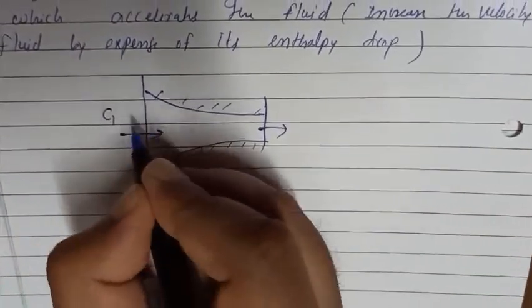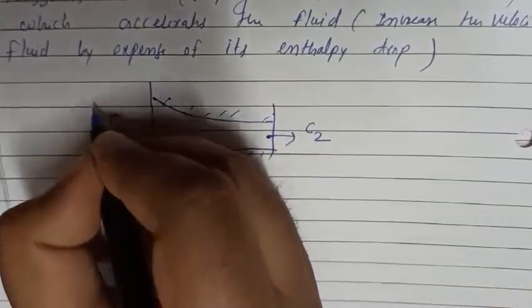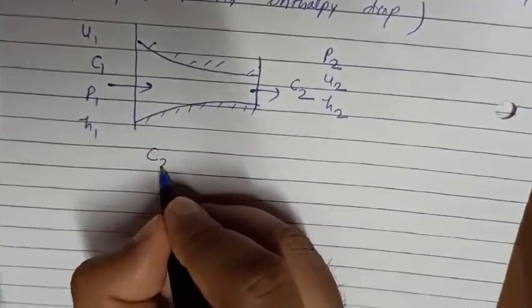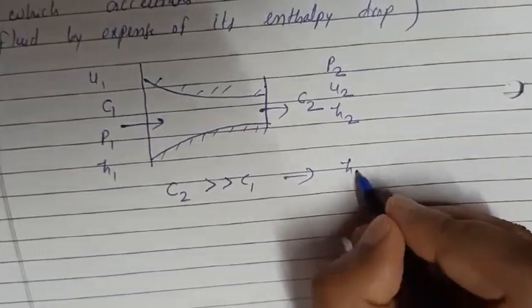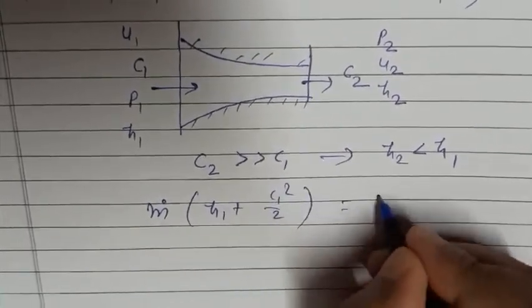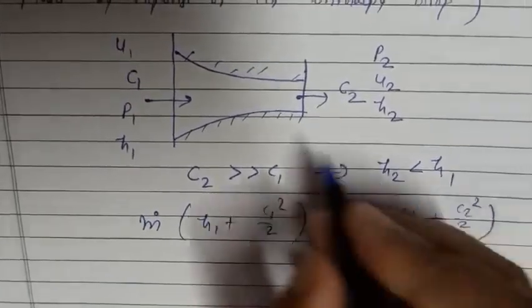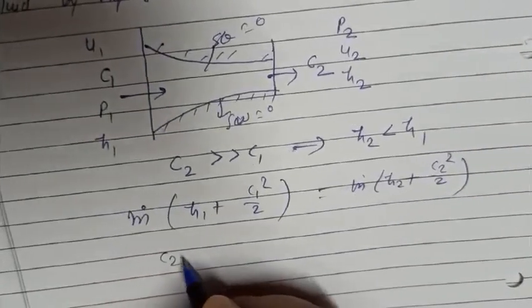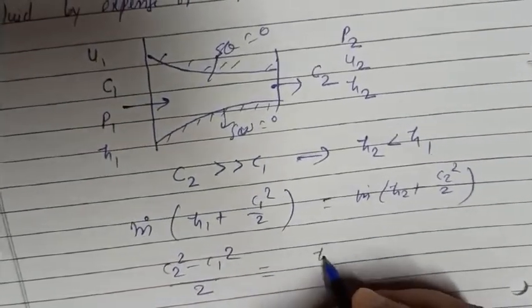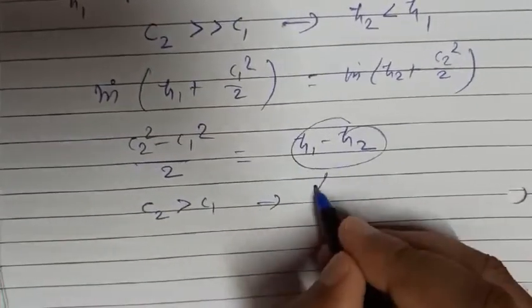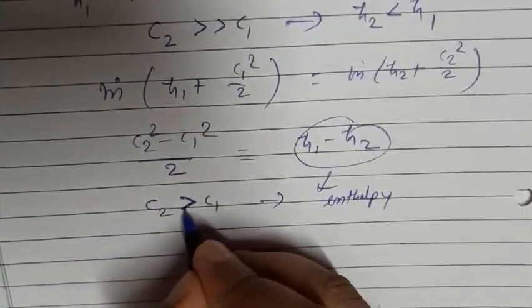Here at inlet we have velocity C1, pressure P1, enthalpy H1, and internal energy U1. At exit we have pressure P2, internal energy U2, and enthalpy H2. Applying the steady flow energy equation: H1 + C1²/2 = H2 + C2²/2. In the absence of heat transfer and work transfer, C2² - C1²/2 = H1 - H2. So C2 is greater than C1 due to this enthalpy drop — velocity increases.